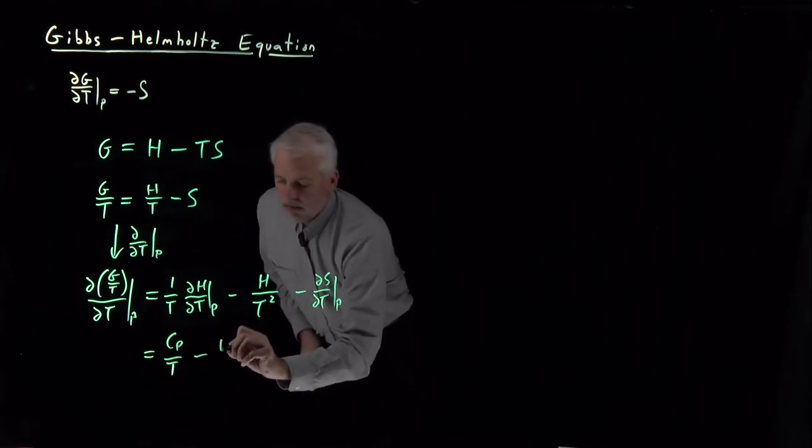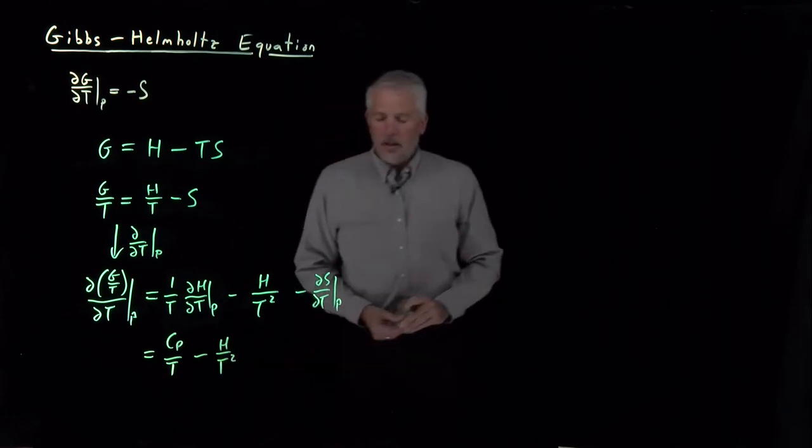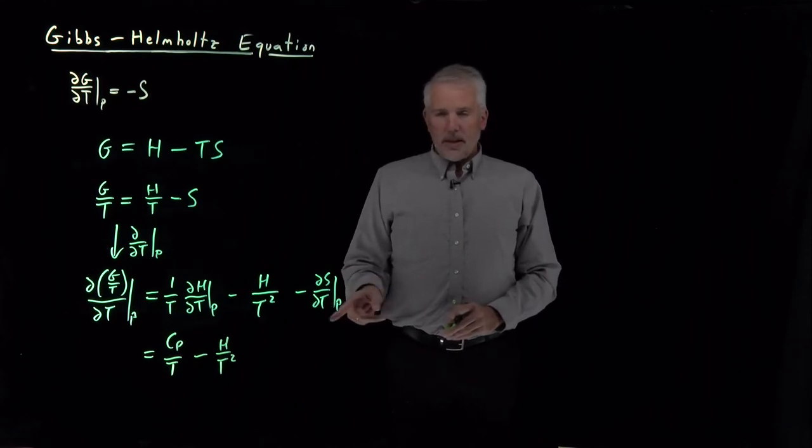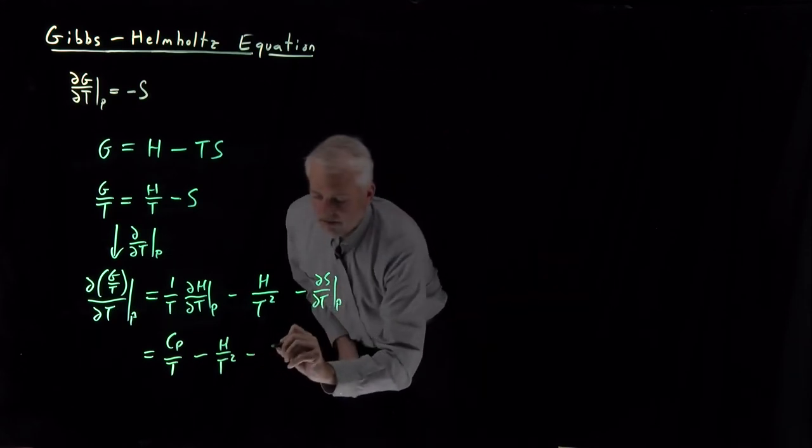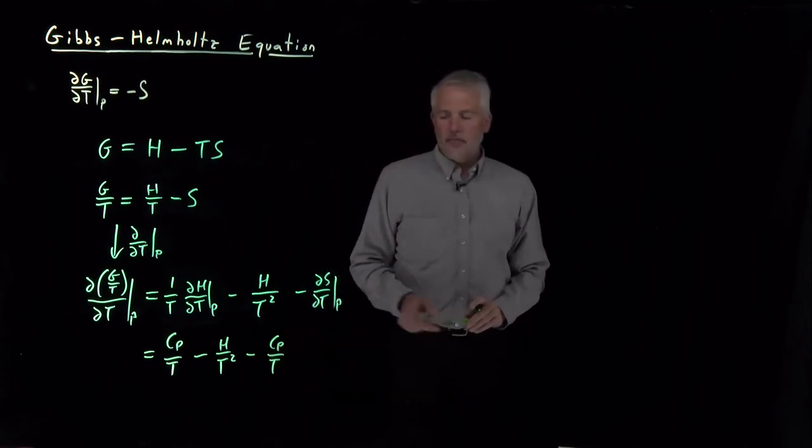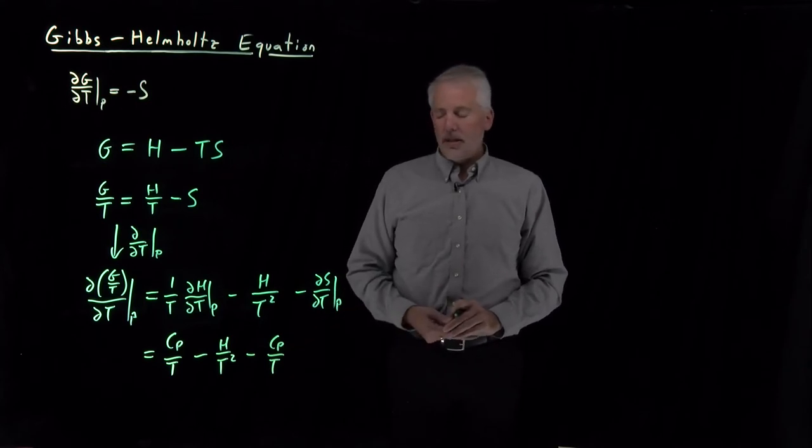The second term, we can't do too much with, minus H over T squared. The third term, we also know something about this: dS/dT at constant P is a derivative we've seen before. That is, in fact, heat capacity divided by temperature. If the derivative is at constant pressure, it's CP, the constant pressure heat capacity, divided by temperature.